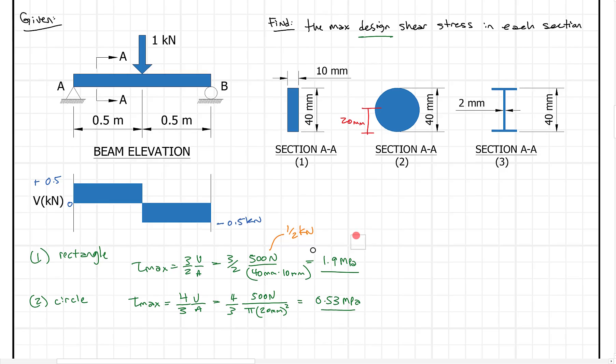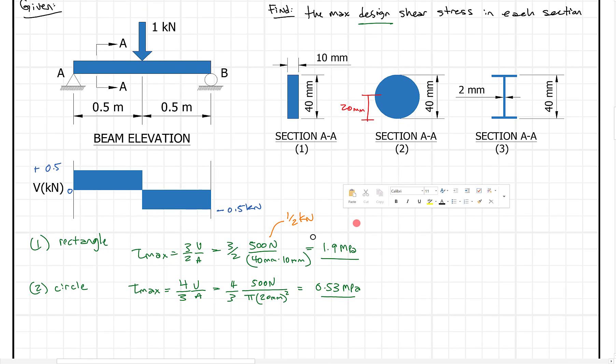And lastly, if we look at this last one here, I'm just going to move up a little bit so I have more room. What do we have? We have this for our wide flange. And what we're really looking for here is our design stress is going to be tau of the web, which is just V over DTW. So here we have 500 newtons divided by the depth, 40 millimeters, and times the thickness of 2 millimeters, thickness of the web. And what we get here is a shear stress of 6.3 megapascals.